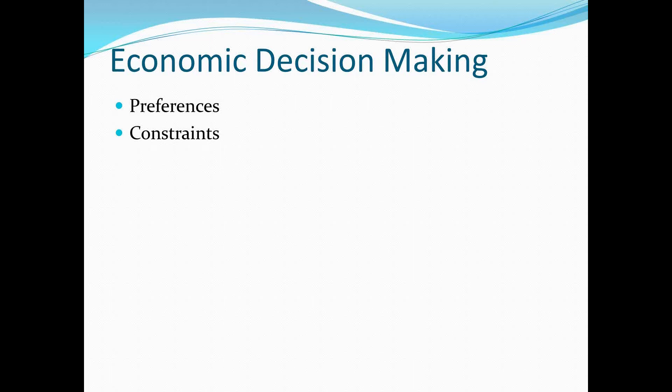And next week, we'll look at the formal neoclassical model of how consumers do that very thing. Now, you have your preferences, you know your constraints, and what you have to do is look out into the world and see what's salient — that is to say, what's important for your decision-making. But just remember, in the card trick that I showed you, or we talked about the attentional blindness, your preferences, your learning, and the reward system produce your creation of salience.